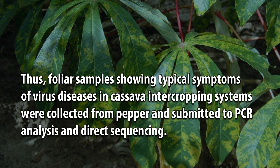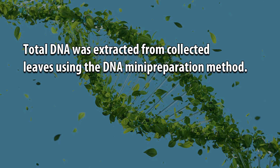Foliar samples showing typical symptoms of virus diseases in cassava intercropping systems were collected from pepper and submitted to PCR analysis and direct sequencing. Total DNA was extracted from collected leaves using the DNA mini-preparation method.